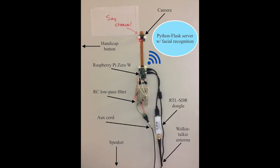If the server recognizes any faces, it will return the names of recognized people in its HTTP response. When the Pi receives their response, it will output a greeting message, again using eSpeak, to identify the name of the person who pressed the button.